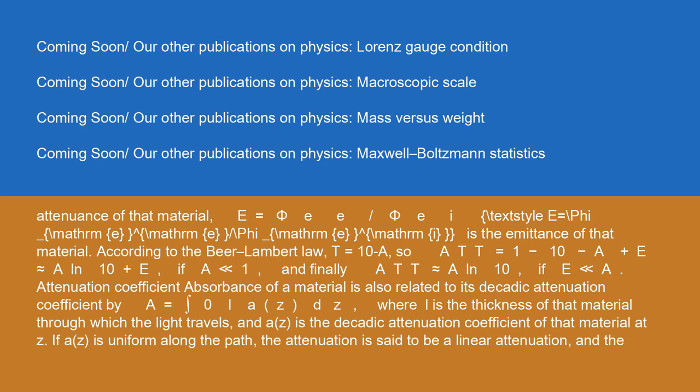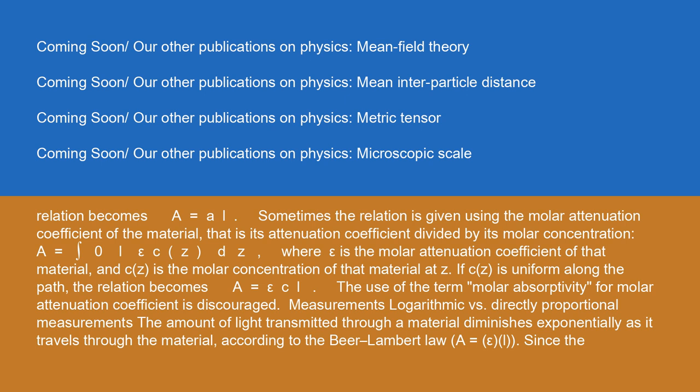Absorbance of a material is also related to its decadic attenuation coefficient by A = ∫₀ᴸ a(z) dz, where L is the thickness of the material through which the light travels, and a(z) is the decadic attenuation coefficient at z. If a(z) is uniform along the path, the attenuation is said to be linear, and the relation becomes A = a × L. Sometimes the relation is given using the molar attenuation coefficient: A = ∫₀ᴸ ε × C(z) dz, where ε is the molar attenuation coefficient and C(z) is the molar concentration at z. If C(z) is uniform, the relation becomes A = ε × C × L. The use of the term molar absorptivity for molar attenuation coefficient is discouraged.